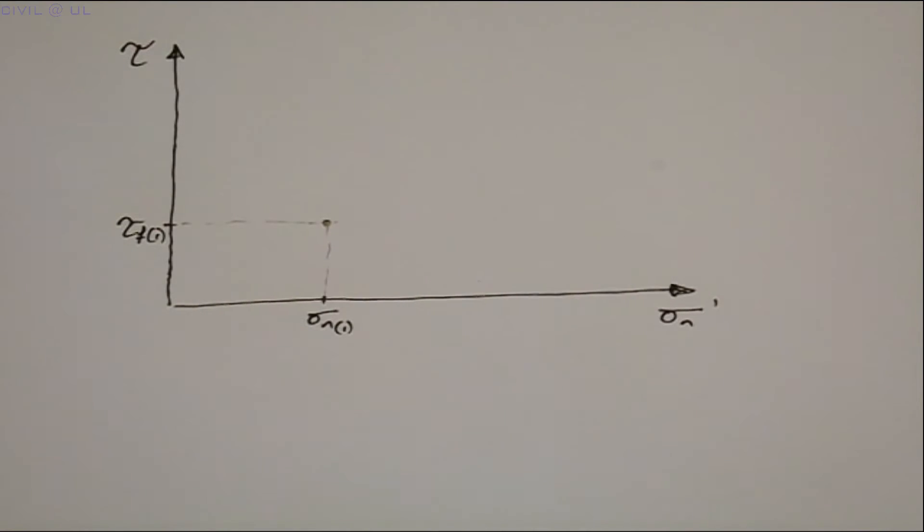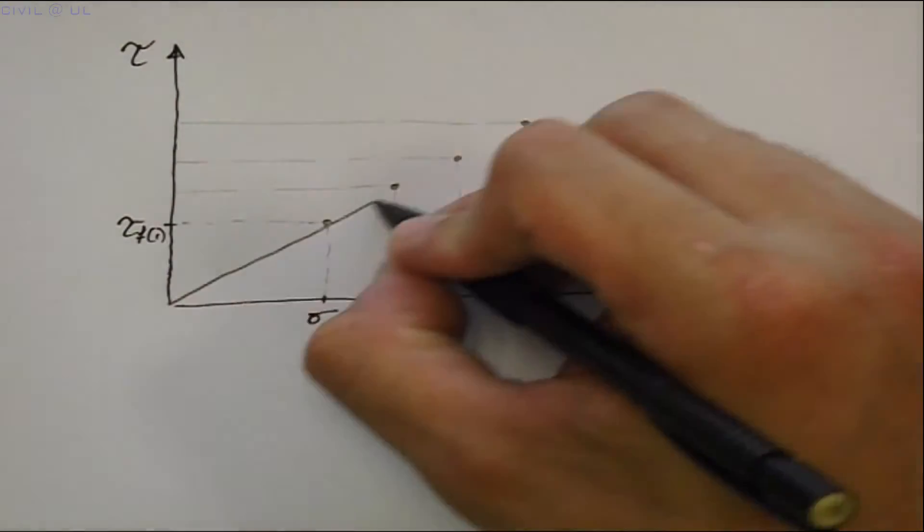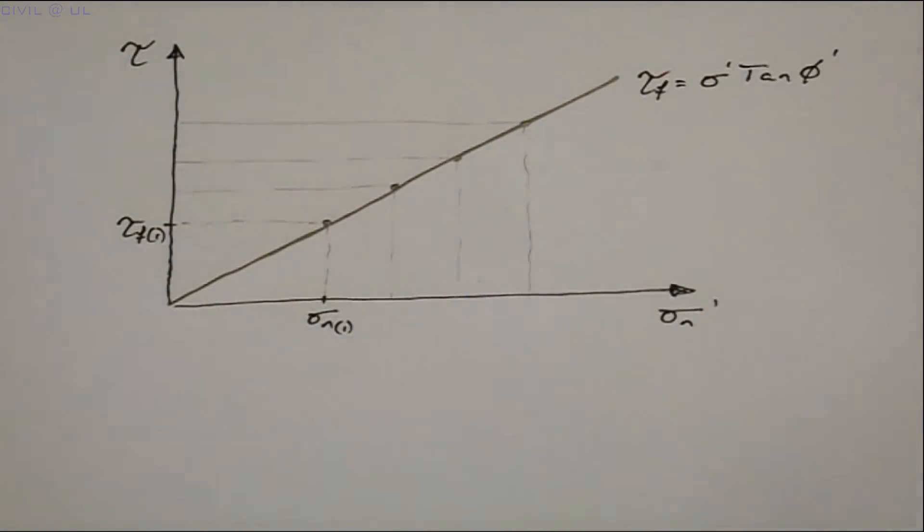The test is repeated a number of times with the applied normal stress increasing in each test. And as we might expect, each increase in normal effective stress results in a greater shear resistance. The best fitting straight line is then drawn through the data and the equation of the line determined.